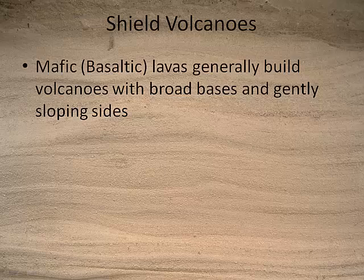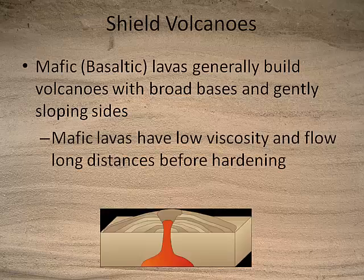Shield volcanoes are almost always made from mafic lavas. Mafic lavas are low in silica and have very low viscosity, so they're very runny. When they erupt from the volcano, they can travel a long distance as a lava flow before they harden, so the volcano tends to be broad with gently sloping sides.